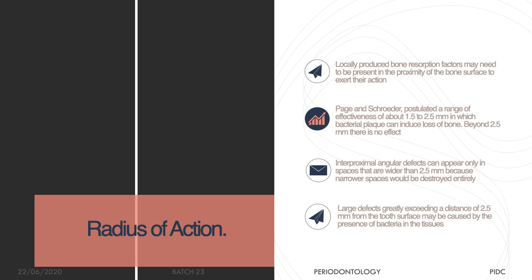Periodontal pathogens have an effect only within 2.5 millimeters of their circumference. A study by Page and colleagues postulated that bacterial plaque must be present within 1.5 to 2.5 mm to induce bone destruction. If the interproximal bone is less than 2.5 mm in width, the entire bone will be lost — resulting in horizontal bone loss rather than angular bone loss. If the interdental bone width is more than 2.5 mm, the bone loss tends toward angular rather than horizontal loss.